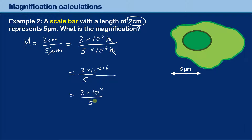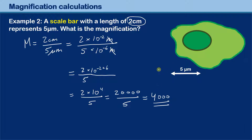Two times ten to the fourth divided by five is 20,000 divided by five. The answer is 4,000 — the magnification is 4,000. The purpose of example two is to show that you can do magnification calculations by only looking at the scale bar, completely ignoring the specimen itself.